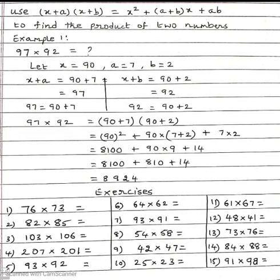Now using the formula (x+a)(x+b) = x² + (a+b)x + ab.